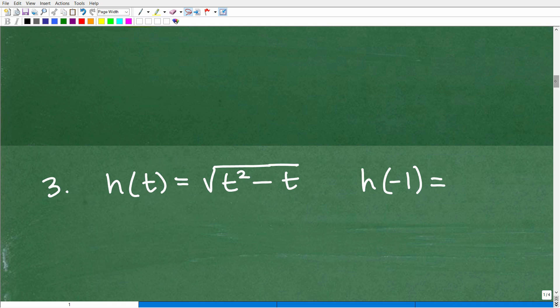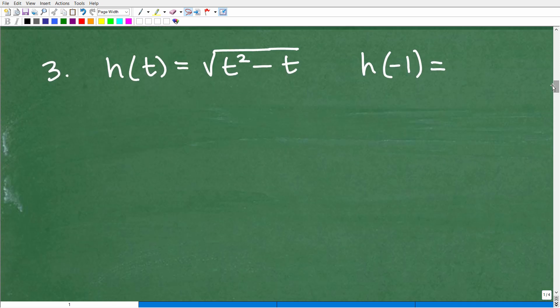Let me scoot this down here. Now let's talk about the name of this function. This is an h function, and we're not using x's, we're using t. This is h of t. That's how we would say that. Notice this, whatever this letter is, this t, this is what it's going to be in the rule.